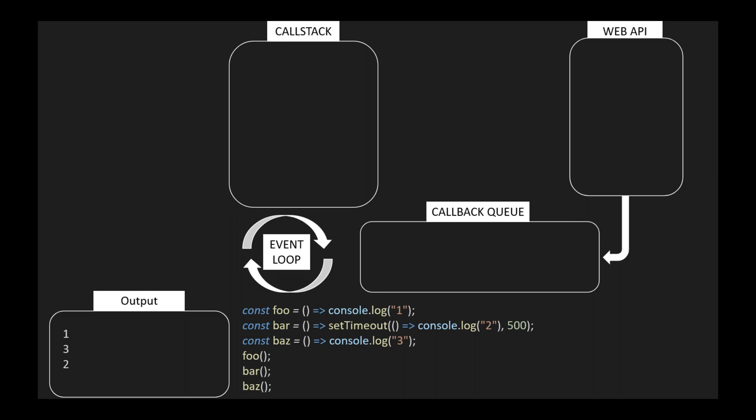Let's see how they are used in the JavaScript runtime. The JavaScript runtime contains a call stack, web APIs, callback queue, and event loop. First, the call stack — as the name suggests, it's a stack that stores all the functions that are currently being executed. Second, web APIs — these are browser APIs used to handle asynchronous tasks like setTimeout, Promise, fetch, etc.